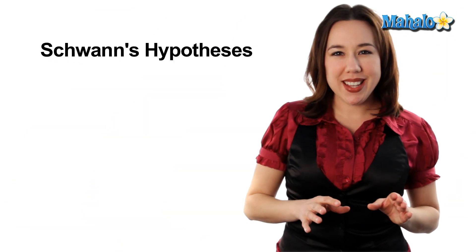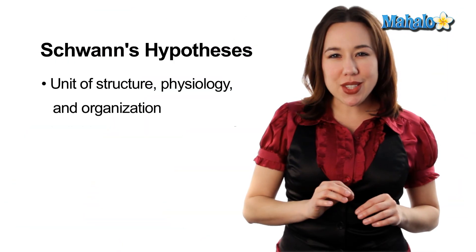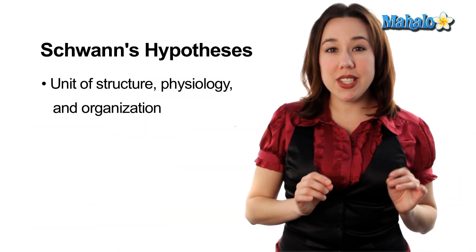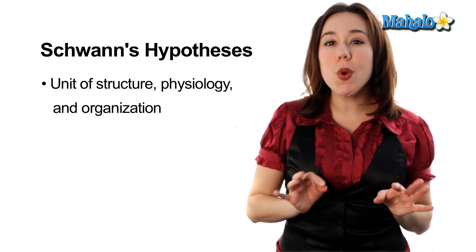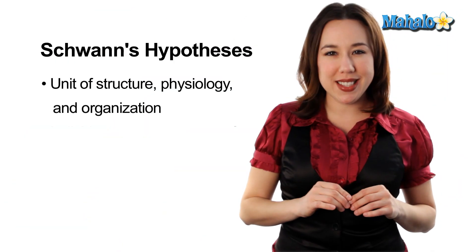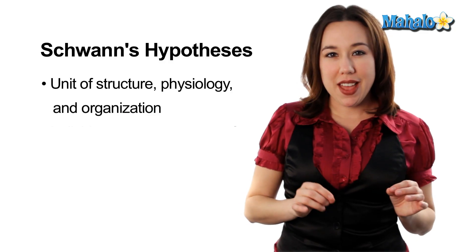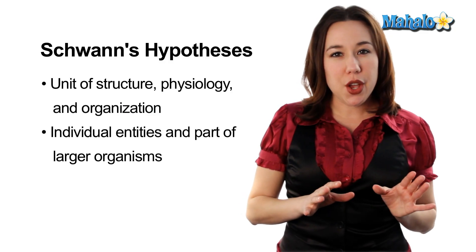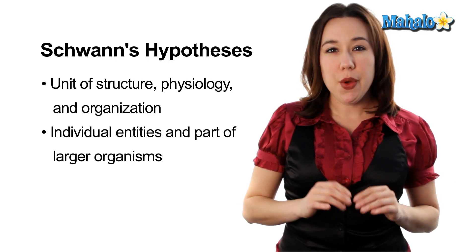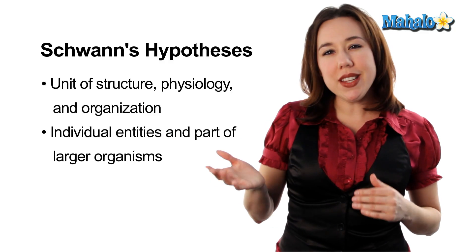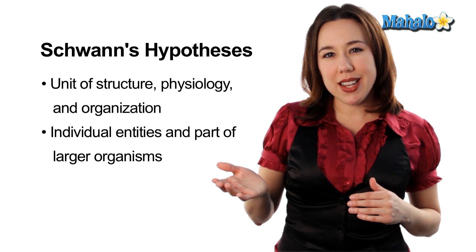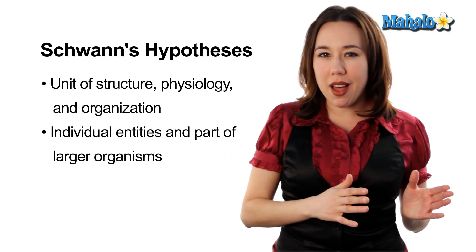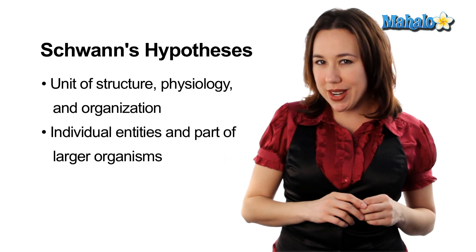In his book, Schwann laid out three hypotheses, two of which were actually correct. One, that cells were the unit of structure, physiology, and organization of living cells. And two, that cells were actually a dual existence — one, that they were an individual entity, but also that they were building blocks of larger organisms.